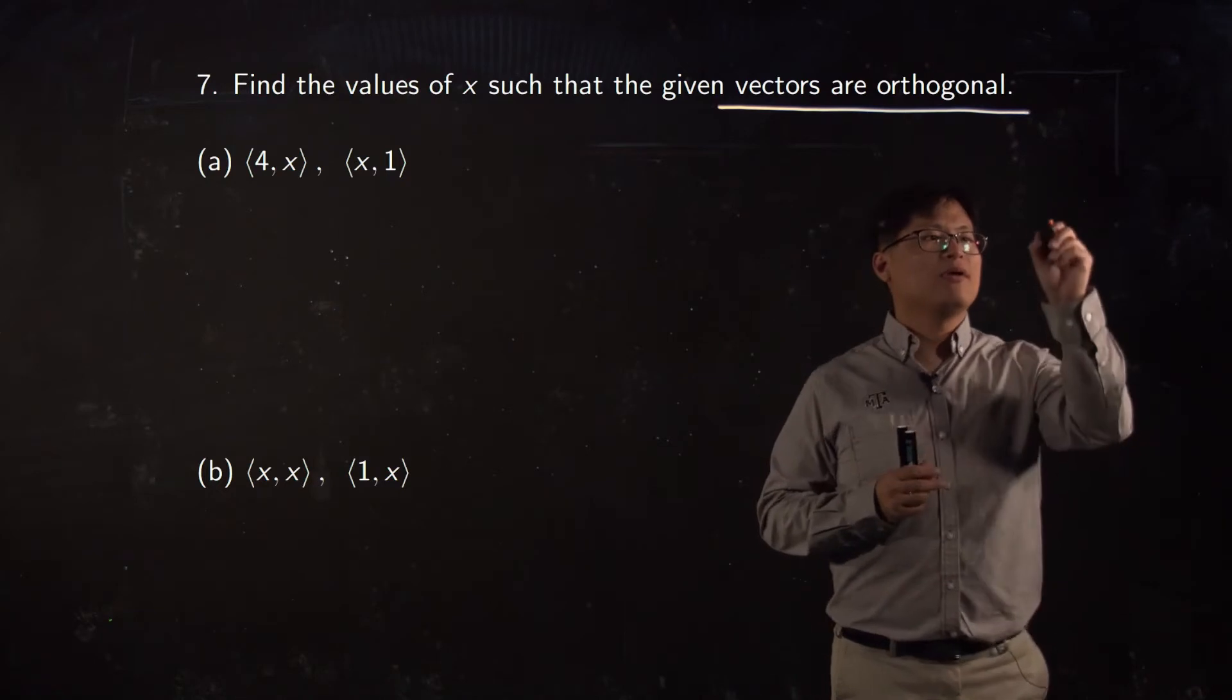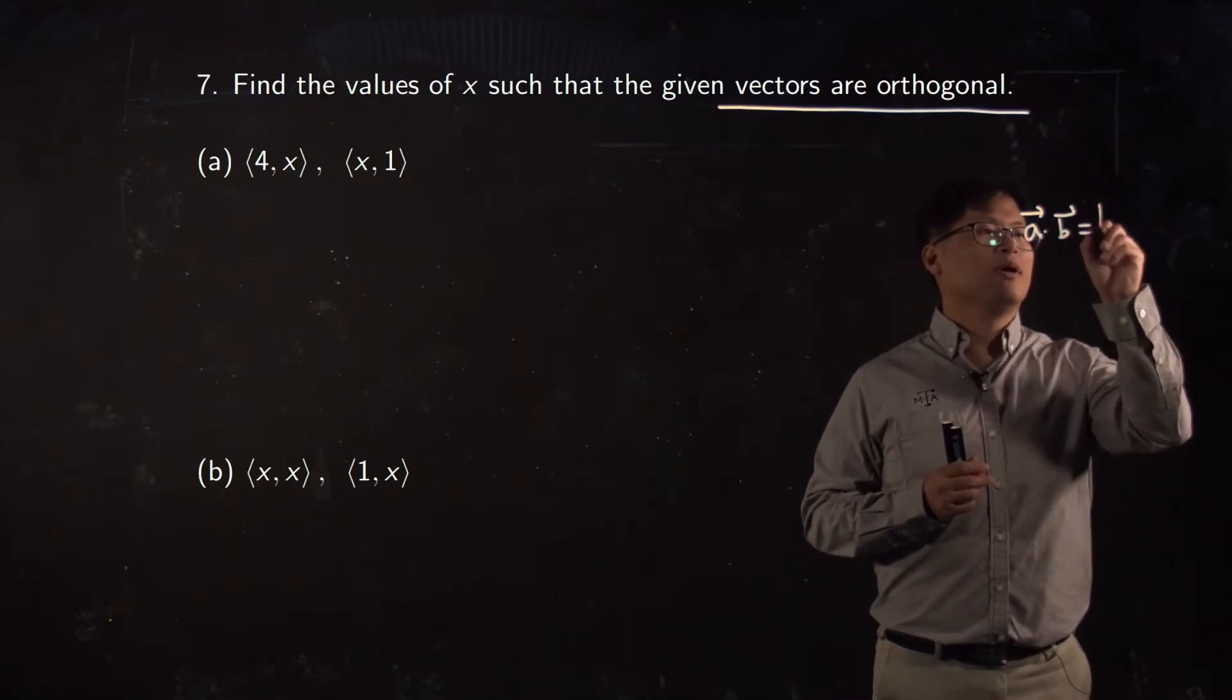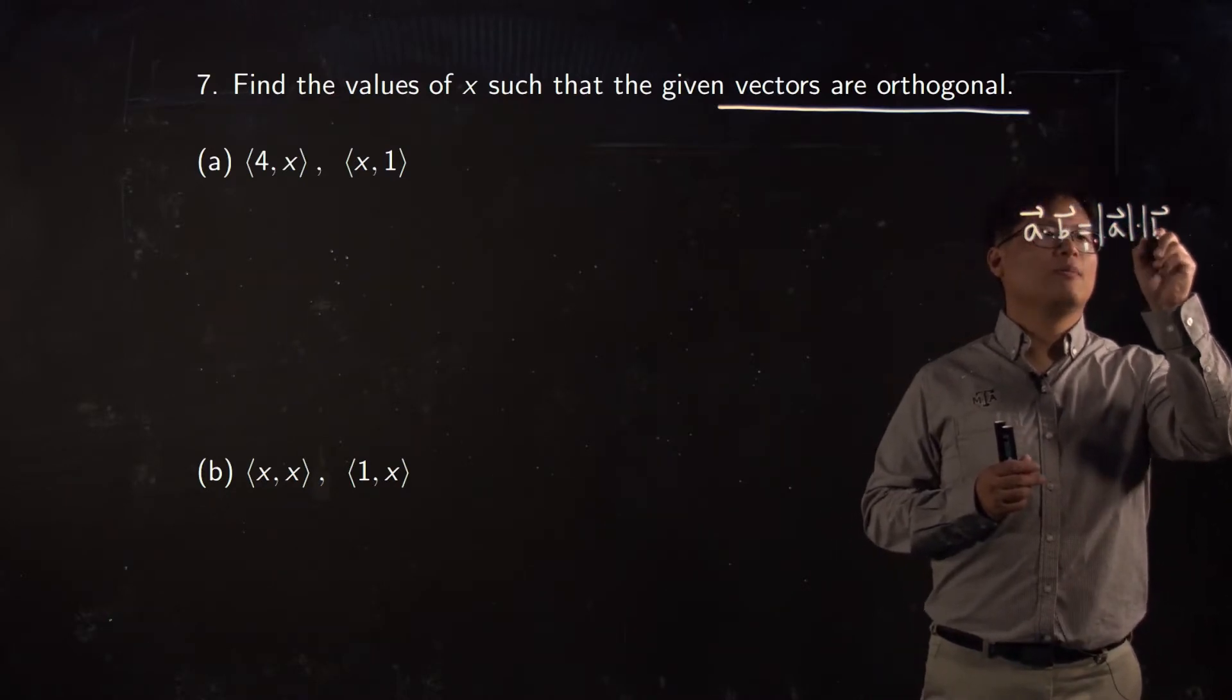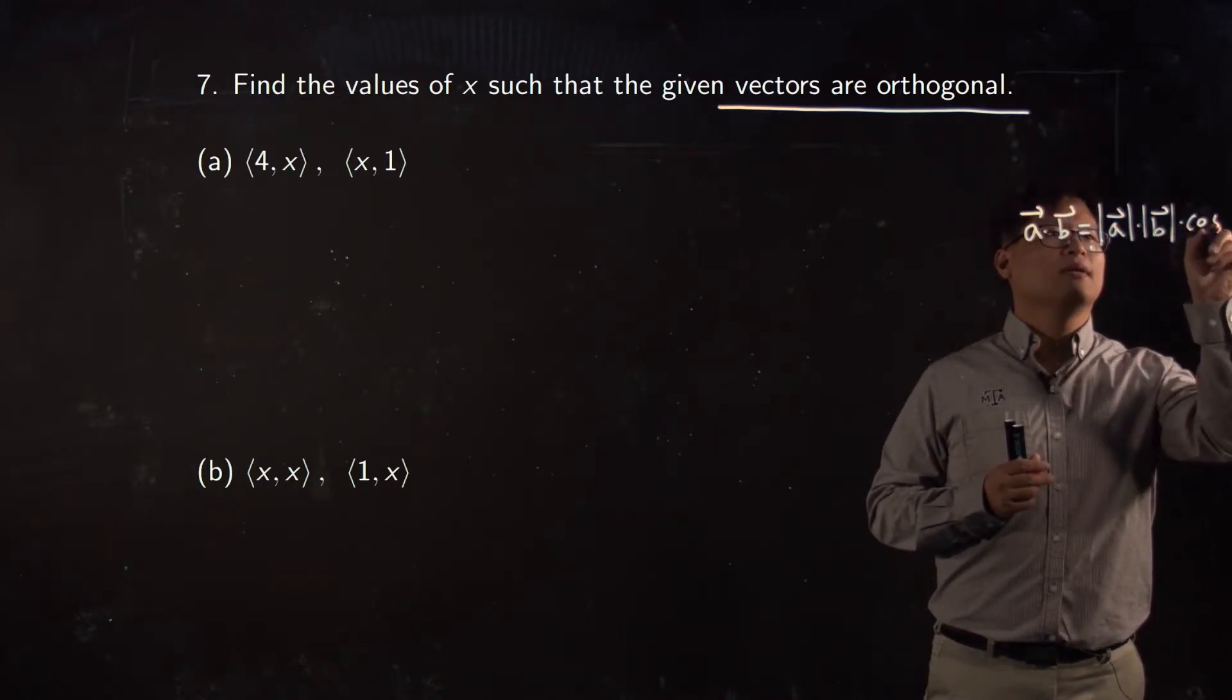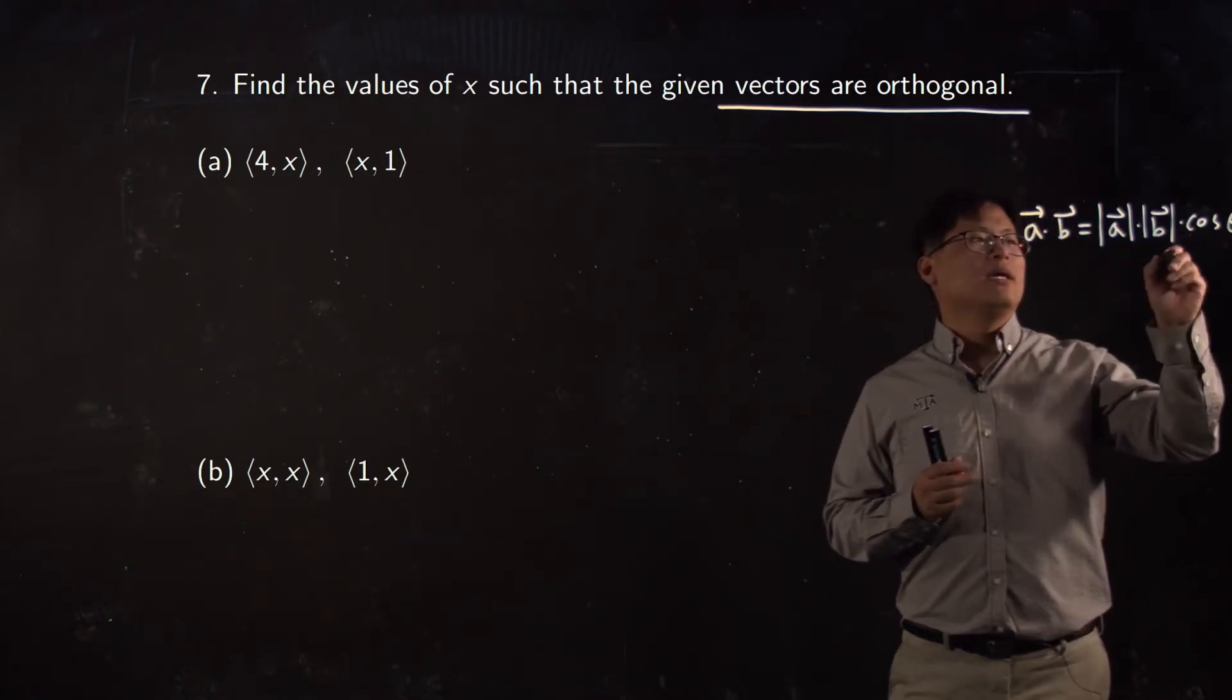Do you remember that formula? a dot b is equal to length of a times length of b times cosine theta. There are two formulas, right? But keep that in mind, like this cosine theta.